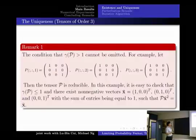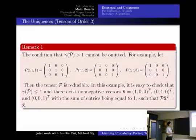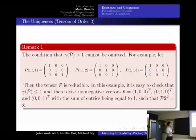We give an example to show the condition gamma P larger than 1 cannot be omitted.